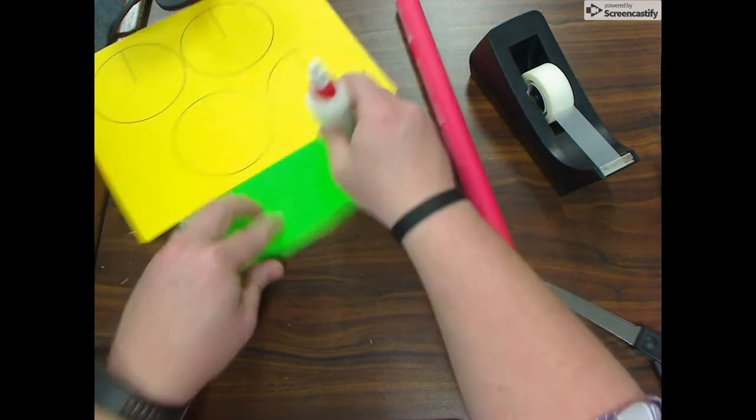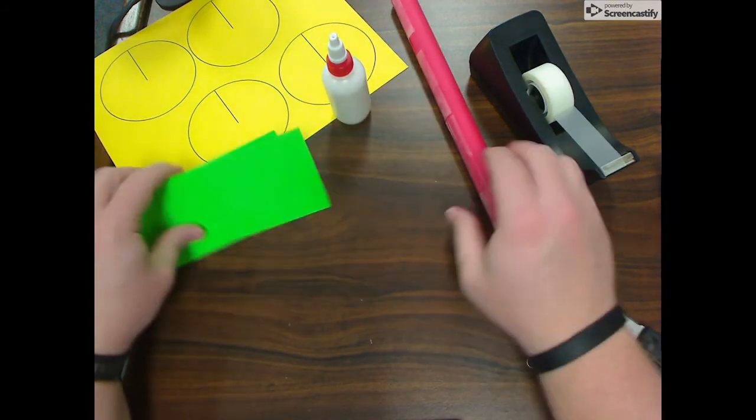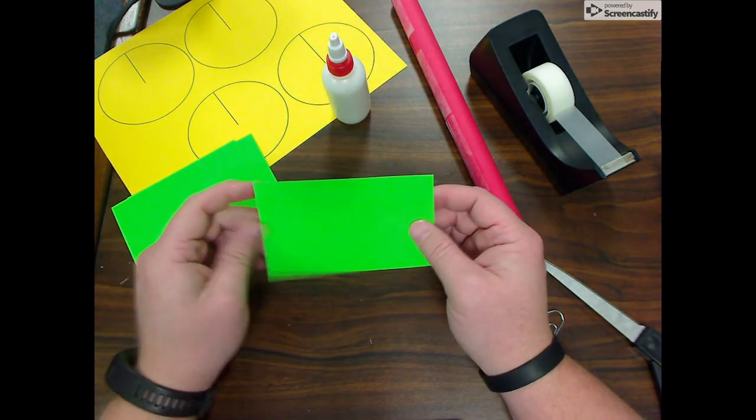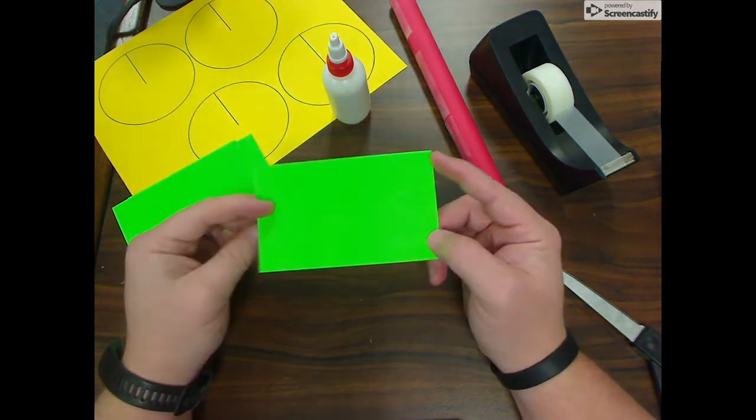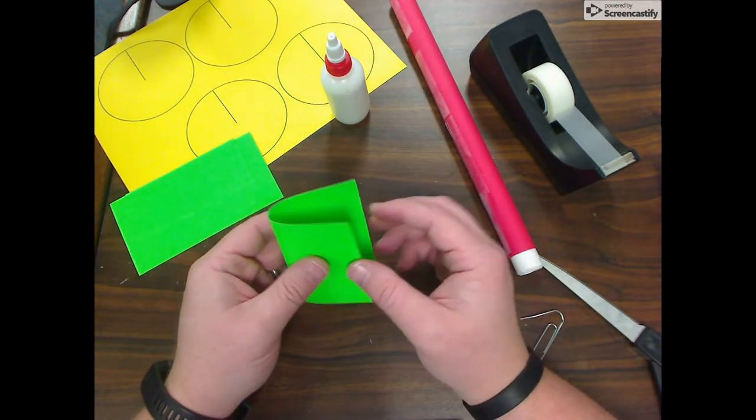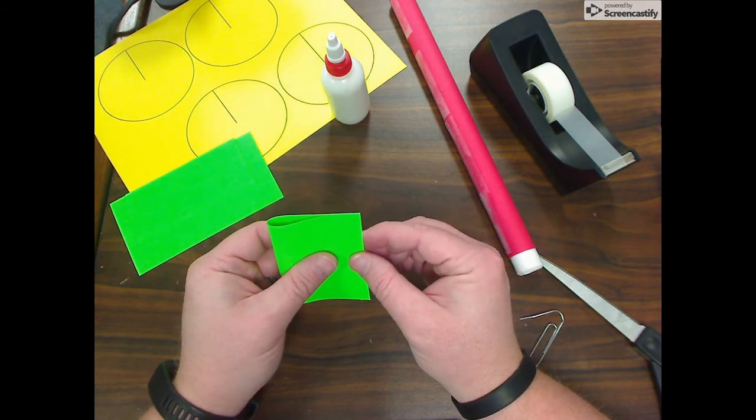All right, the next step is to build three fins for your rocket, and you are going to do that by using a note card. You need three different note cards, and you are going to start by folding the note card in half.